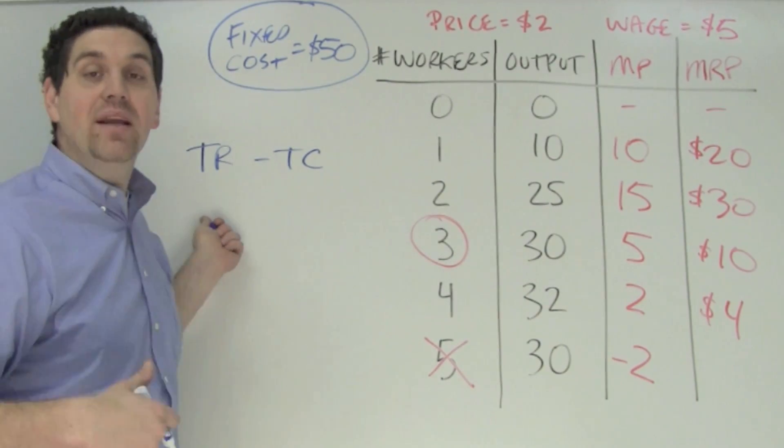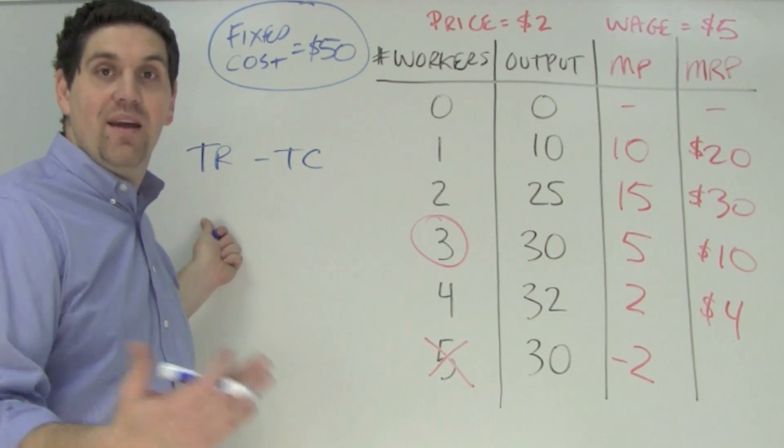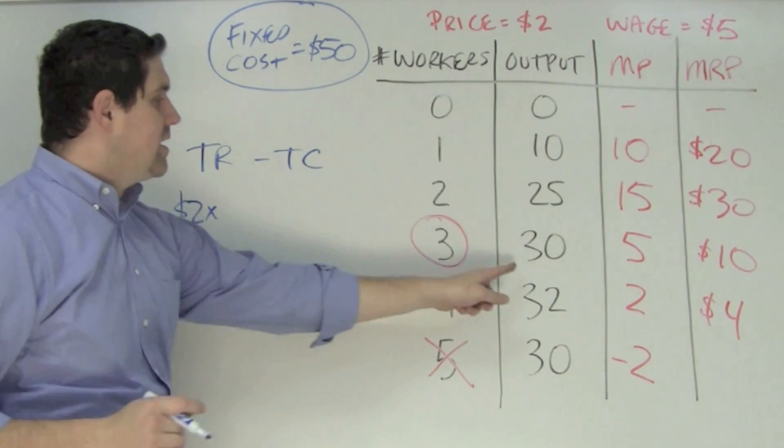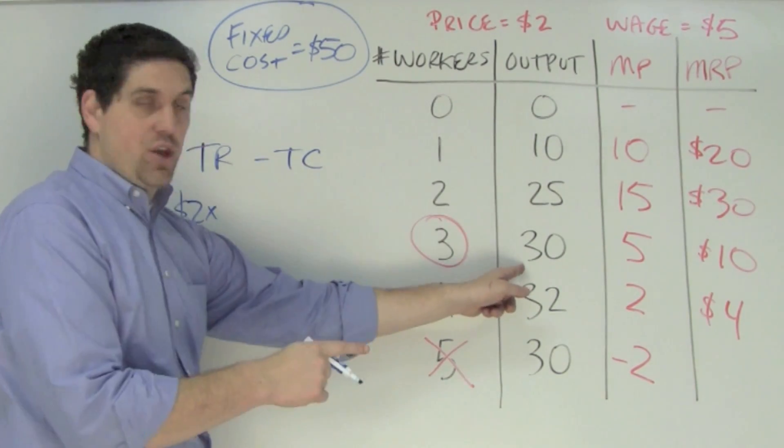Total revenue is the price of the product times the quantity of those products you're actually selling. The price of the product we know is $2 times the quantity, which for hiring three workers is $30.